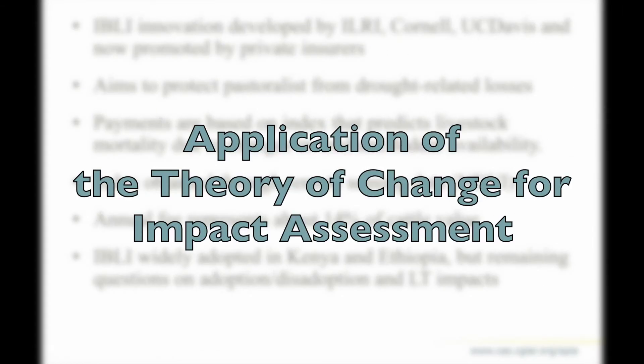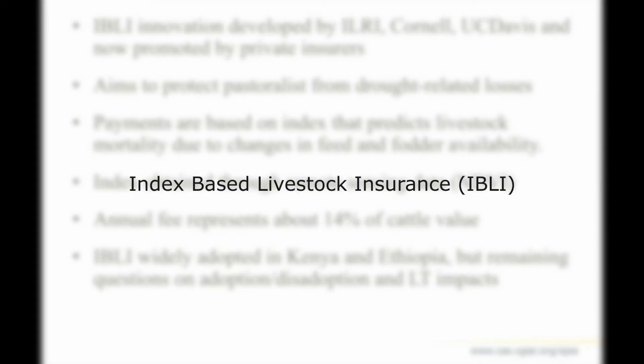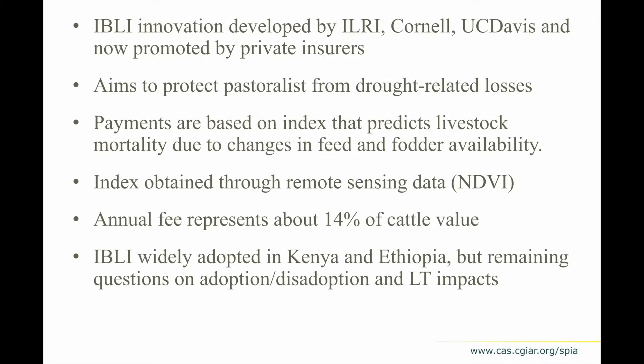Now we want to see an application of the theory of change for impact assessment. The example is a real project called Index Based Livestock Insurance, or IBLI — an innovation developed by IFPRI, Cornell, and University of California, Davis, and now promoted by private insurers. This insurance aims to protect pastoralists from drought-related losses. Payments are based on an index calculated using remote sensing data that predicts livestock losses, with an annual fee representing 14% of cattle value. IBLI has been widely adopted in Kenya and Ethiopia, but many questions remain regarding long-term impacts, which an impact assessment will try to answer.